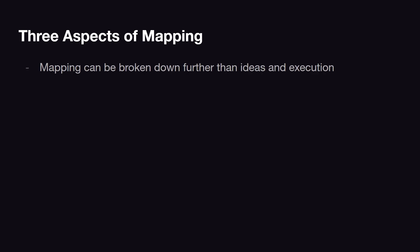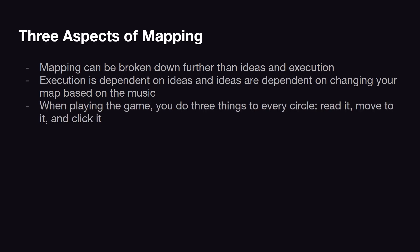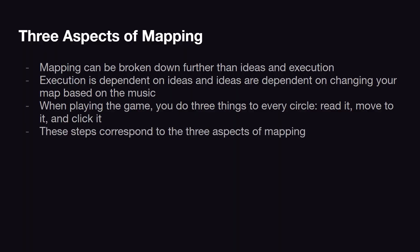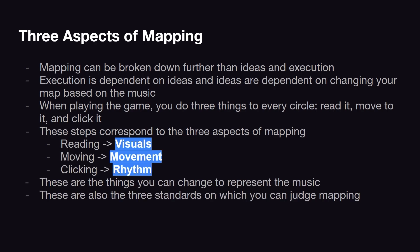So far I've talked about breaking mapping into ideas and execution, but mapping can be broken down further. Because execution is dependent on ideas, if we can break down what you can actually change in your map, we can break down mapping as a whole. Mapping is a limited medium and the player has to do three things to every object: read it, move to it, and click it. This relates to the three aspects of mapping — visuals, movement, and rhythm — which are the tools you can use to represent the music, and the standards on which you can judge mapping.